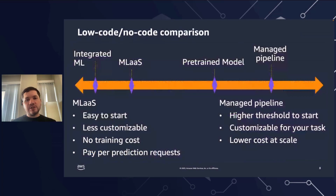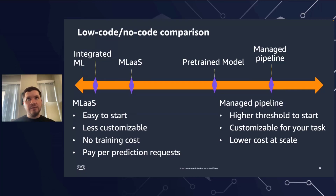If we put all these types of services on one axis: on the left side, we have machine learning as a service, which is very easy to start, less customizable, but you don't have any training cost and you pay per request — perfect if you have low volume or peak load. On the right side, you have a managed pipeline with a higher threshold to start, but it will be customizable for your task and may have lower cost at scale because you can adapt your model for your infrastructure and type of task.